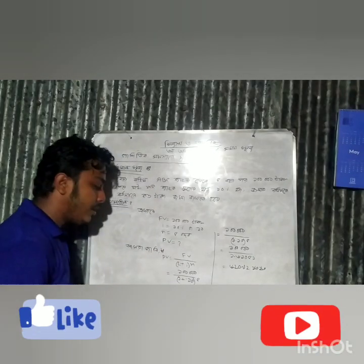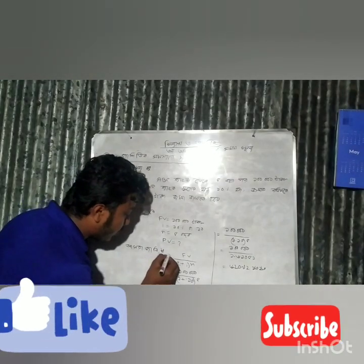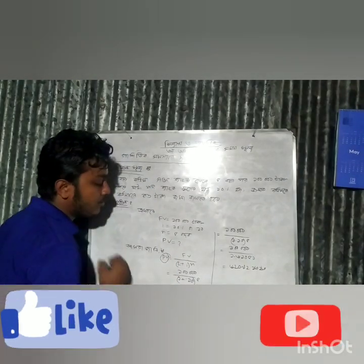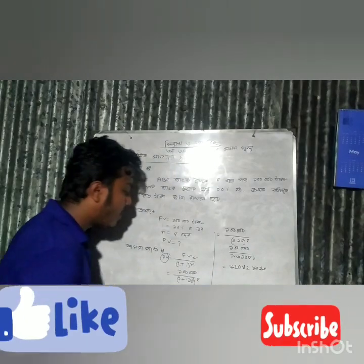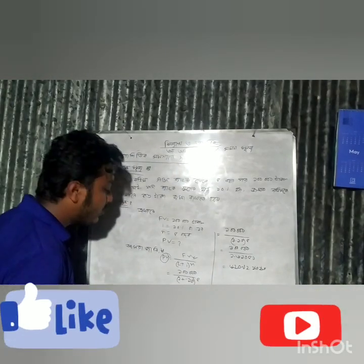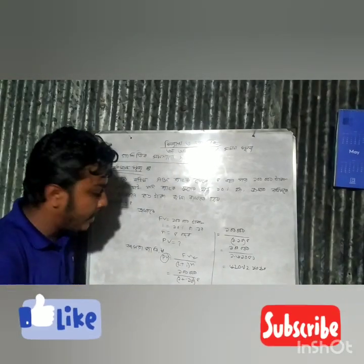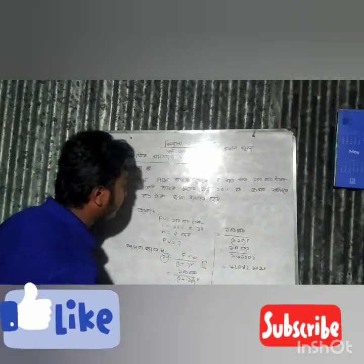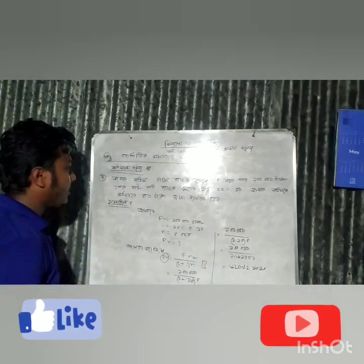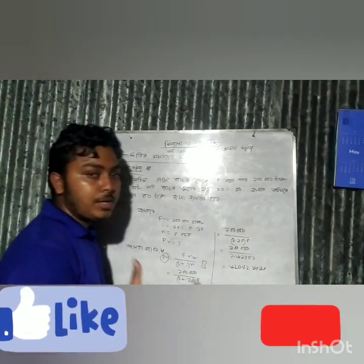Pb is equal to fb divided by 1 plus i into a. This is a very important thing. Let's take a look.